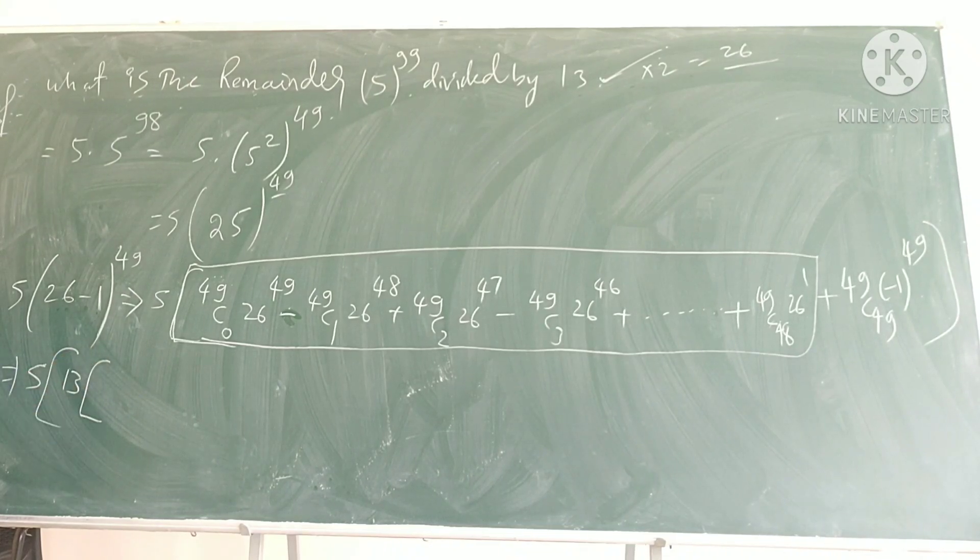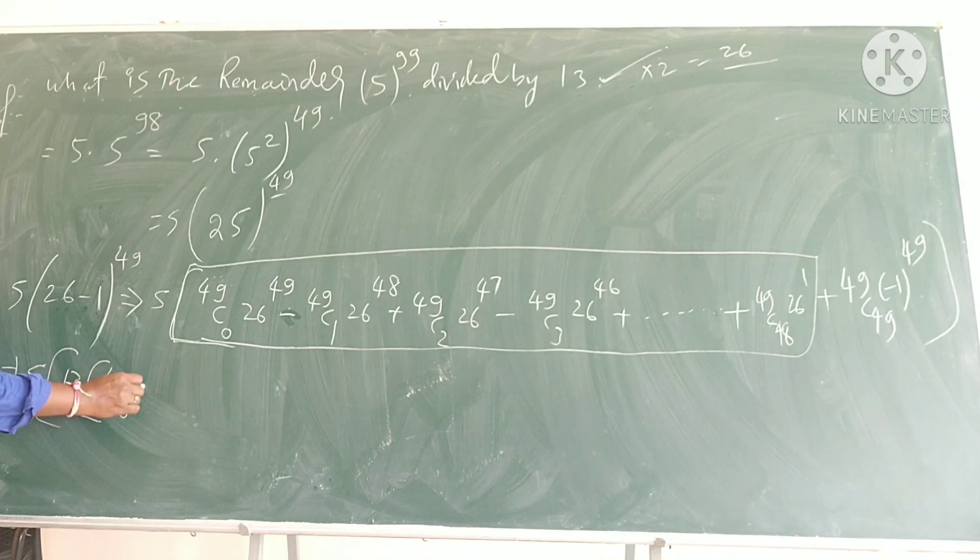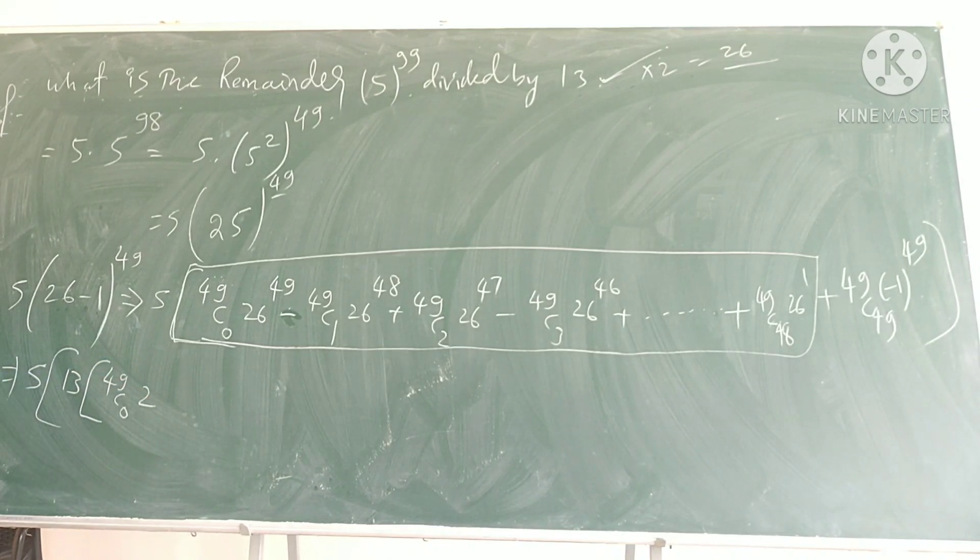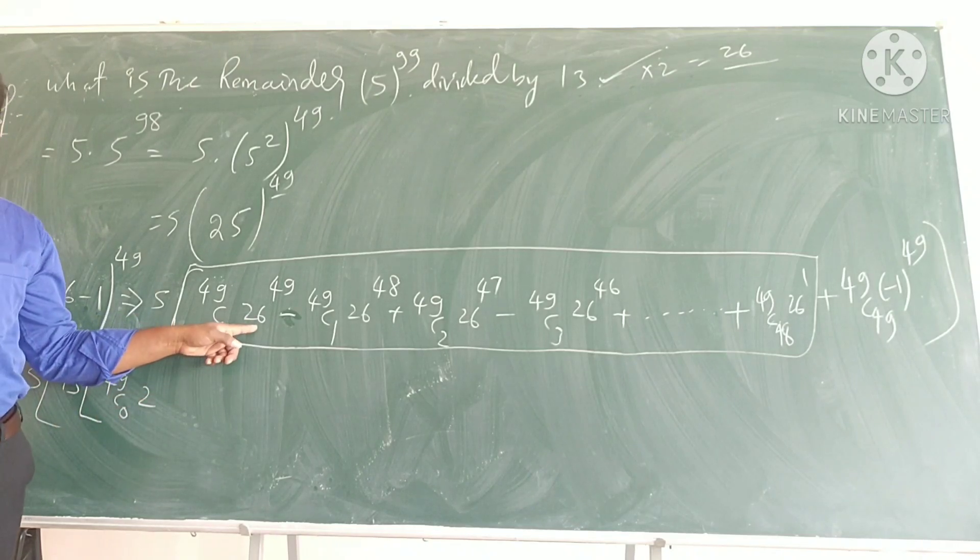So, can I take 13 common? So, if I take 13 common, what I get here? 49 C 0, 2, no not 2, something, something you get, okay, that something is not required, 26 I can write as 13 times 2, those are.